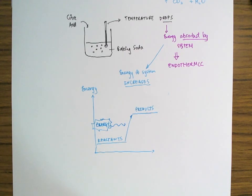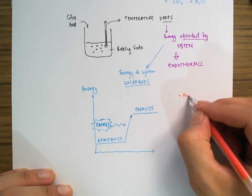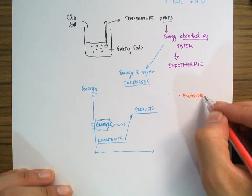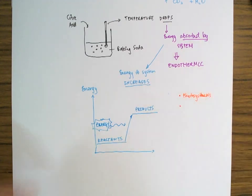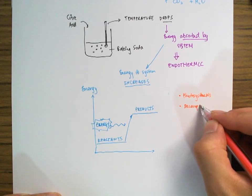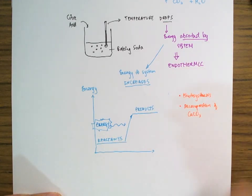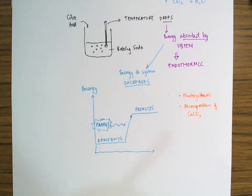As a side note, there are several other endothermic reactions. Some examples are photosynthesis — if you could carry out photosynthesis in a test tube and touch it, you'd feel it's cold, absorbing energy from your skin. Another example is the decomposition of calcium carbonate, which is limestone. When calcium carbonate decomposes, it forms calcium oxide and liberates carbon dioxide gas. Those are two examples of endothermic reactions.